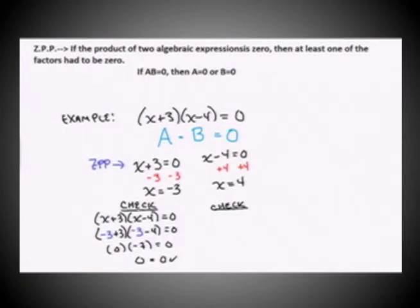And now checking positive four by plugging in. So I'll start by just rewriting my original equation. X plus three times x minus four equals zero. And next I'll plug four in for x in both of the factors.